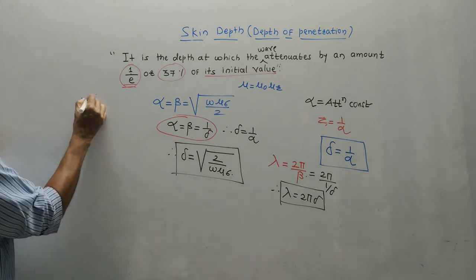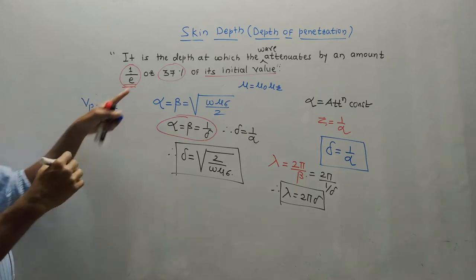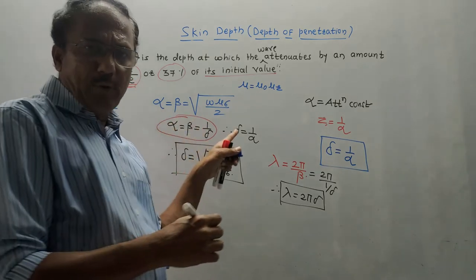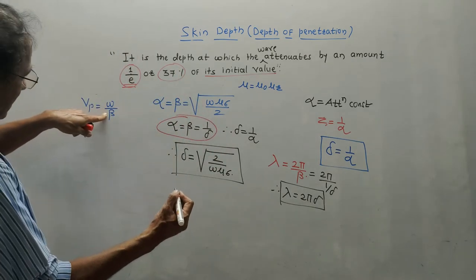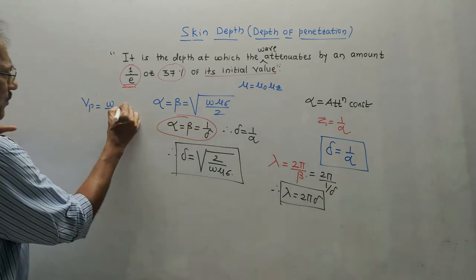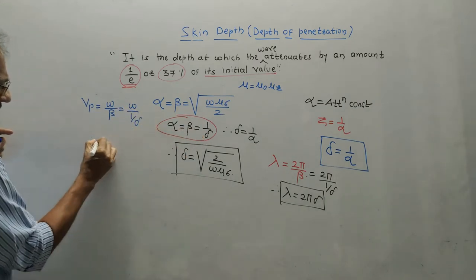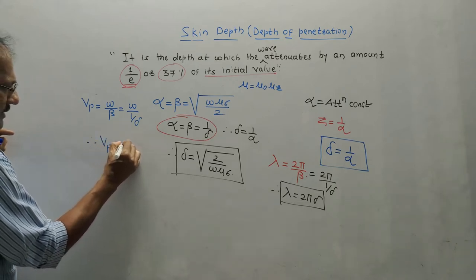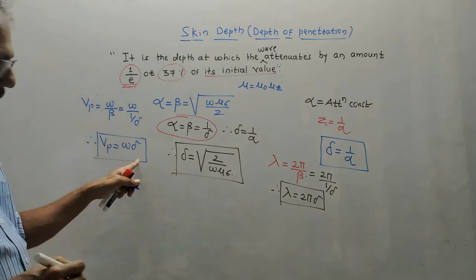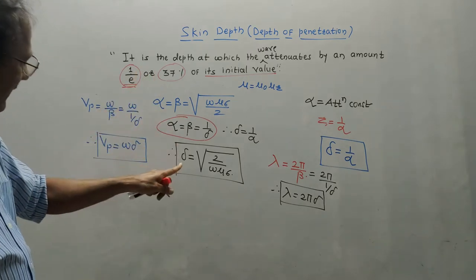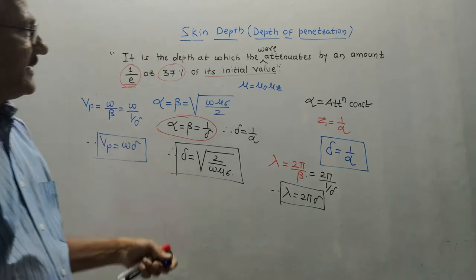The velocity of propagation, vp, is given as omega divided by beta. This is the generalized expression for uniform plane waves. Since beta equals 1/delta, substituting gives velocity of propagation equal to omega times delta. This is the equation of velocity of propagation for a good conductor in terms of skin depth or depth of penetration, delta.